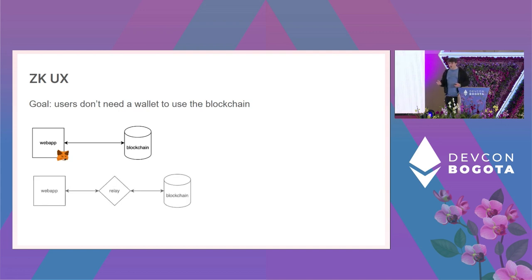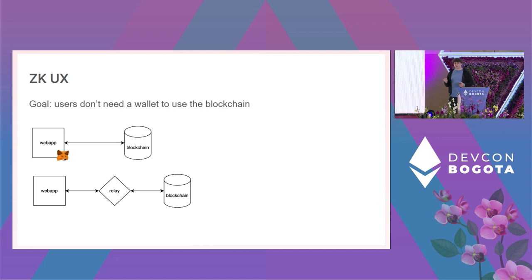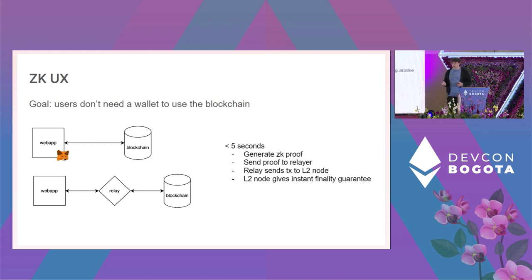If we use ZK identities instead of wallets, we can build a more traditional three-tier architecture with a relay that bundles and sends transactions. The flow: the web app generates a ZK proof, gives it to the relay, the relay creates a transaction and posts it to the blockchain. There are many economic models for relays — subscriptions, free trials, etc. The relay is not a trusted entity; it can censor or go offline, but the user can always use a different relay or broadcast themselves. The relay also can't compromise the ZK proof — any modification makes it invalid.